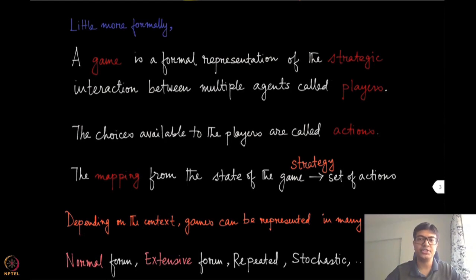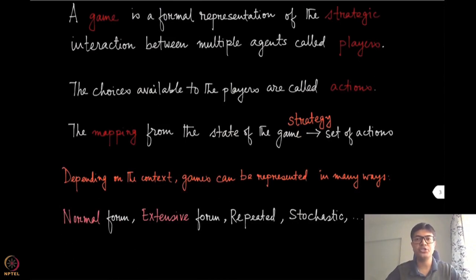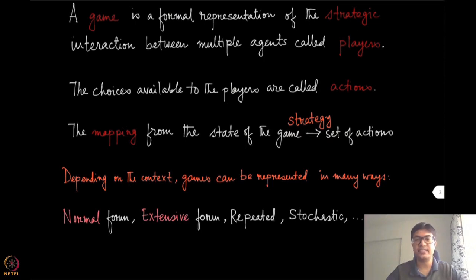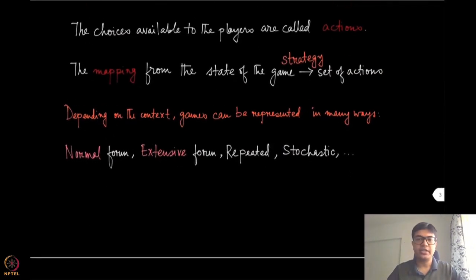We will sometimes use the term 'strategy.' At this point it is a little more abstract — we have used both strategy and actions as the same. But in principle, a strategy is a mapping from the state of the game to the set of actions. Here we had just one state, but if there are multiple states of the game then we define strategy as this mapping, and we will see examples of that later in the course.